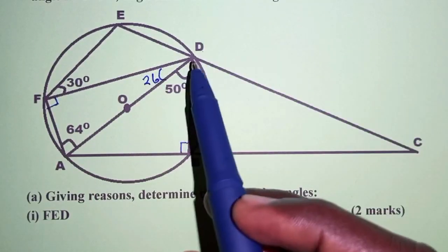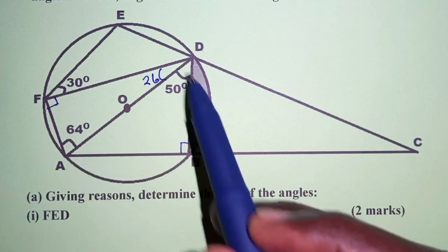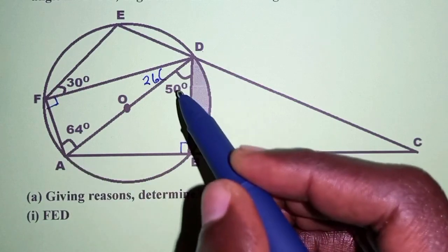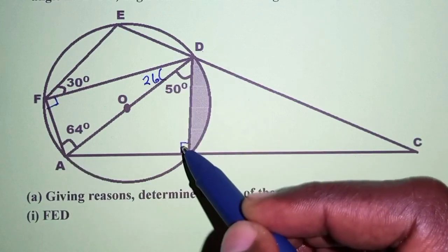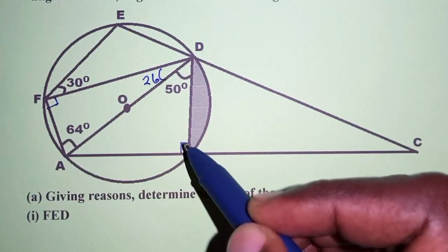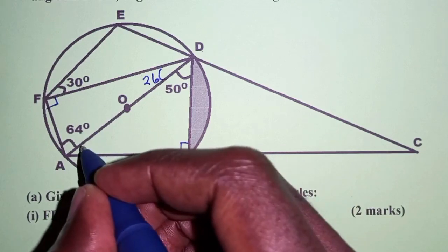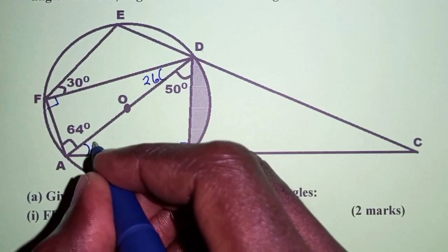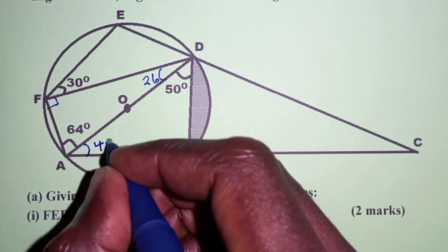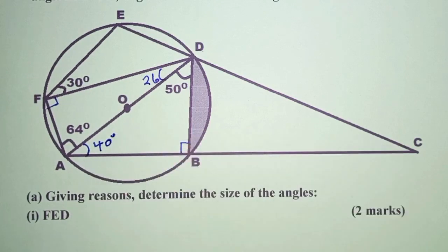We can also consider triangle ABD. We have 50 plus 90, that is 140. Then 180 minus 140 gives us 40 degrees here. Angles of a triangle add up to 180 degrees.